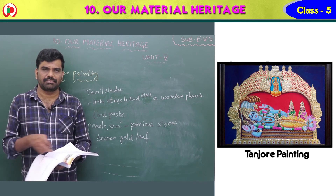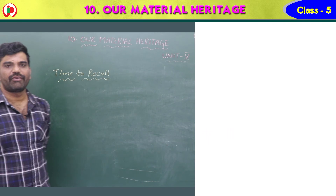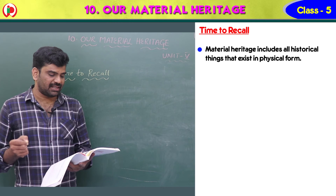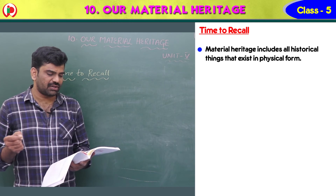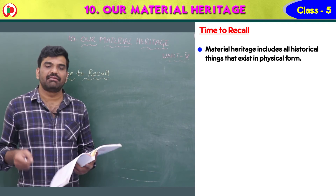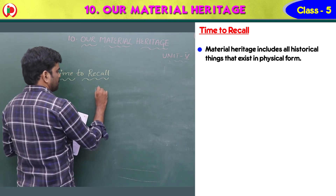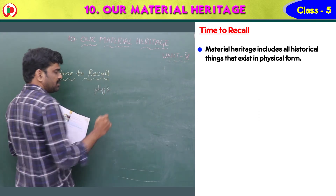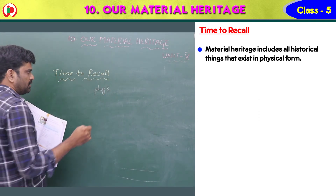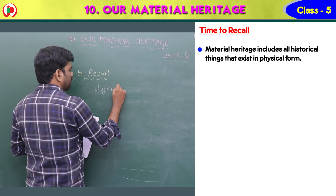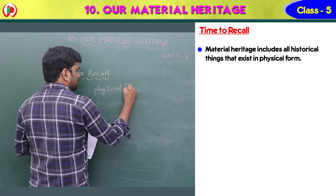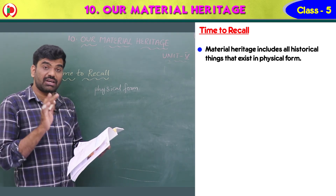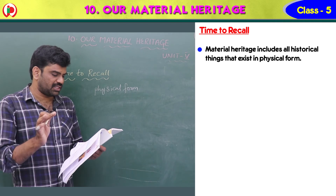Now it is time to recall the lesson. Material heritage includes all historical things that exist in physical form. Non-material heritage is also present. Physical form includes monuments, architecture, and paintings.